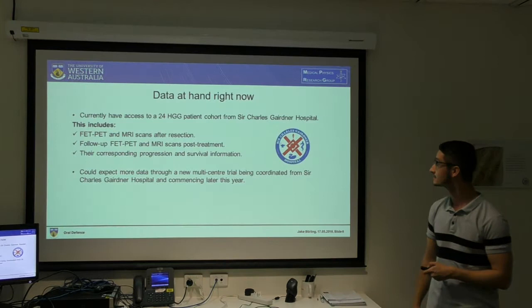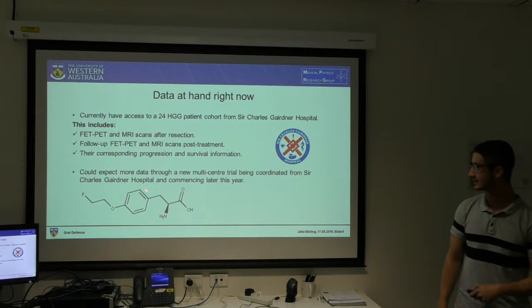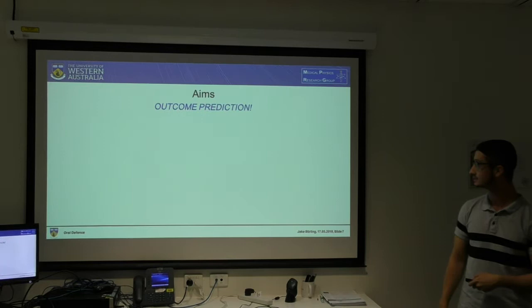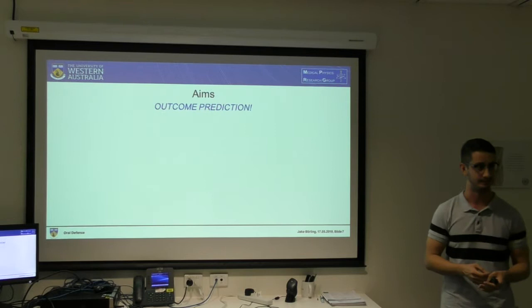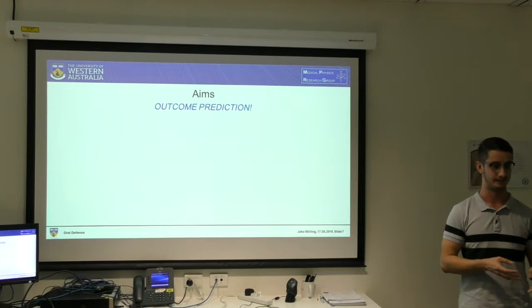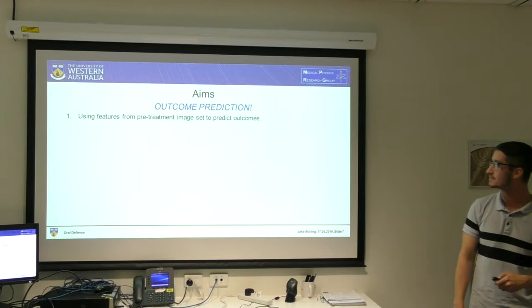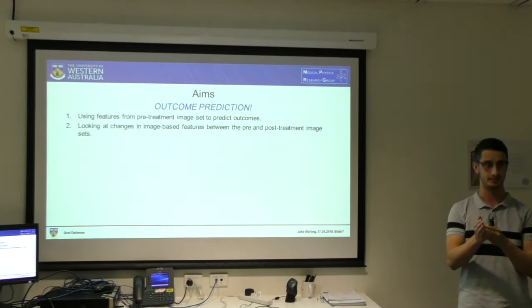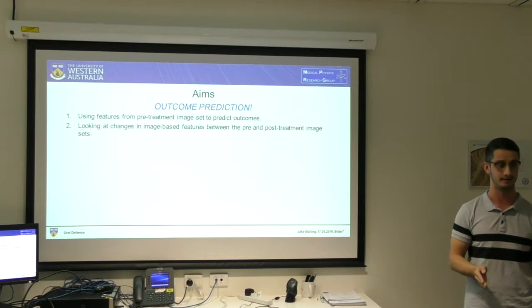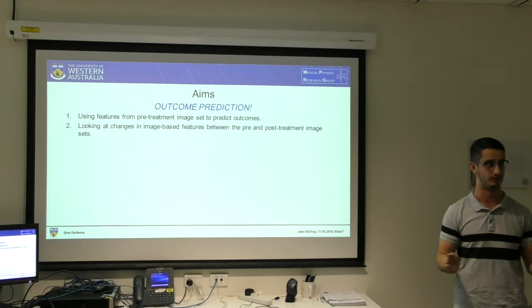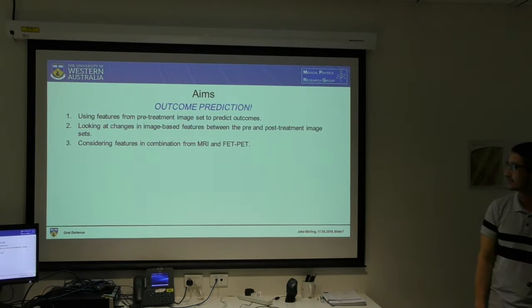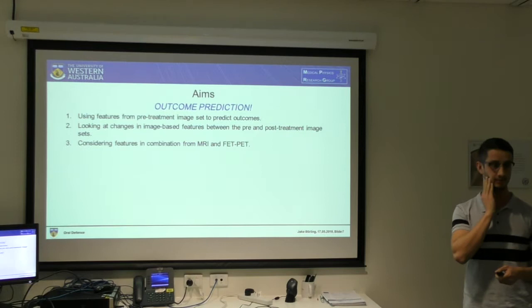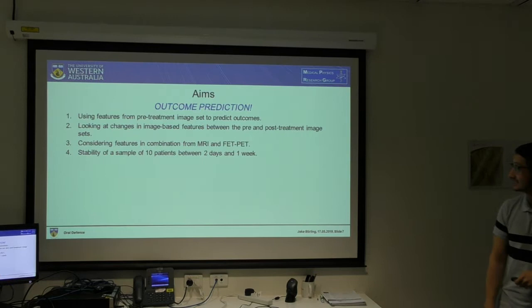This is an image of the FET molecule — we've got fluorine on the end there. The overarching aim is outcome prediction: given a FET-PET image and extracting features, what's going to happen to the patient? We use features from the pre-treatment scans. We'll also look at changes in image-based features between the pre-treatment and post-treatment sets and associate those changes with prognosis. Thirdly, we'll consider features in combination from both MRI and FET-PET. Additionally, we'll look at the stability of features for 10 of the 24 patients between two days and one week.